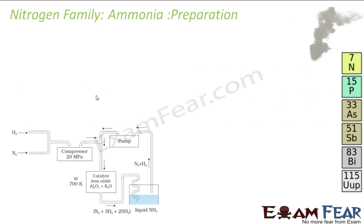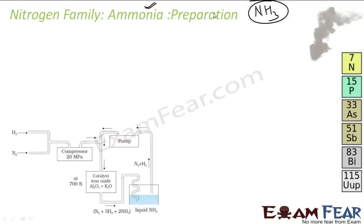The next important compound in the nitrogen family is ammonia, that is NH3. We will talk about the preparation. Ammonia is present in small quantity in air and soil by default. It is generally formed by decay of nitrogenous organic matter, for example urea. By the decay of urea, you get NH3 naturally.